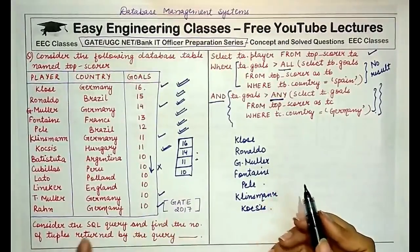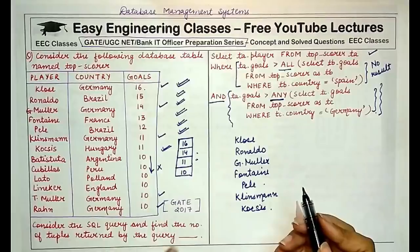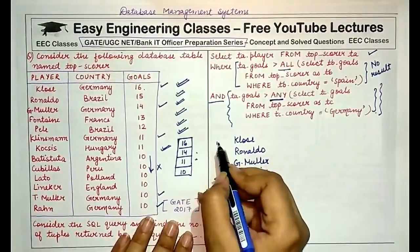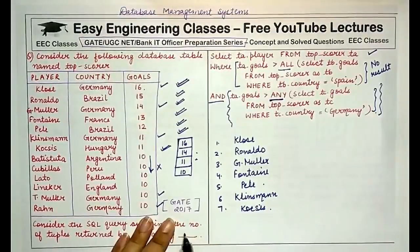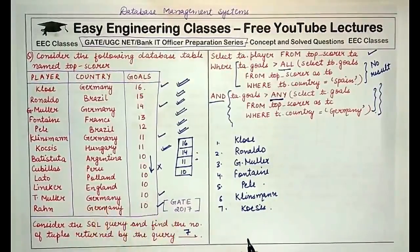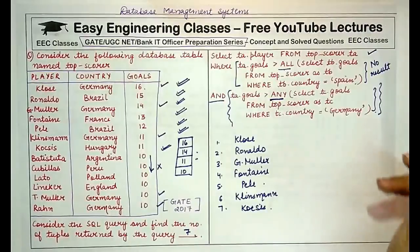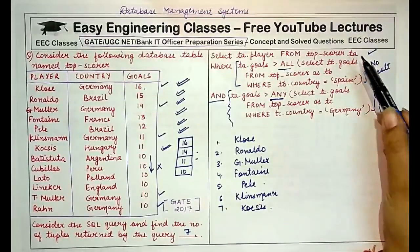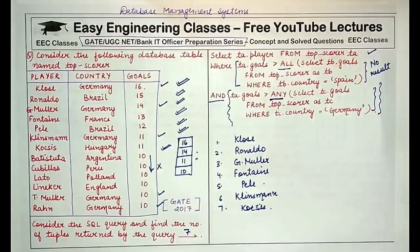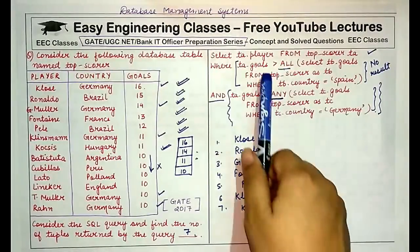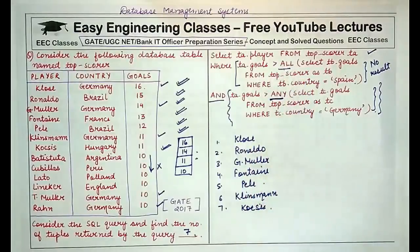The tuples returned by the final query are the names: Close, Ronaldo, G. Muller, Fontaine, Pele, Klinsman and finally Fox's — seven tuples. The answer is seven. The key trick in this query was handling the intermediate null table: since the inner query returns a null result, we treat that constraint as absent and only apply the remaining constraint.